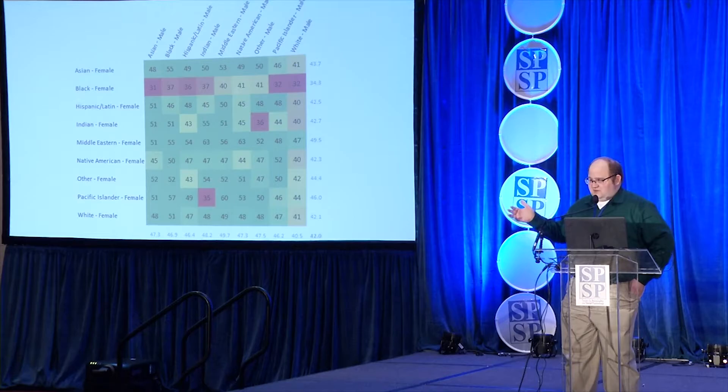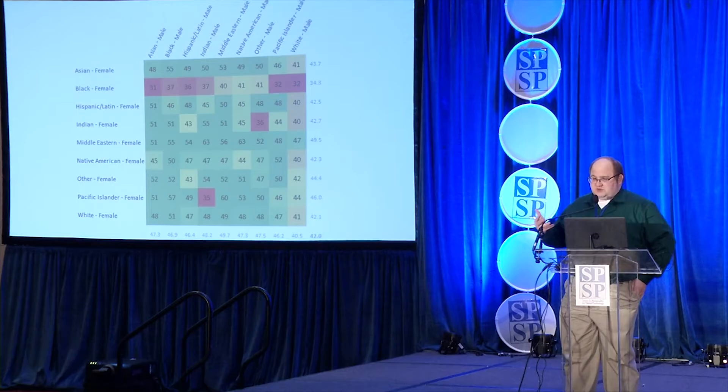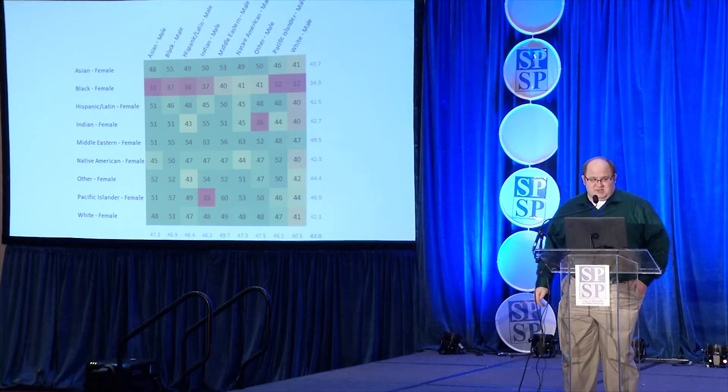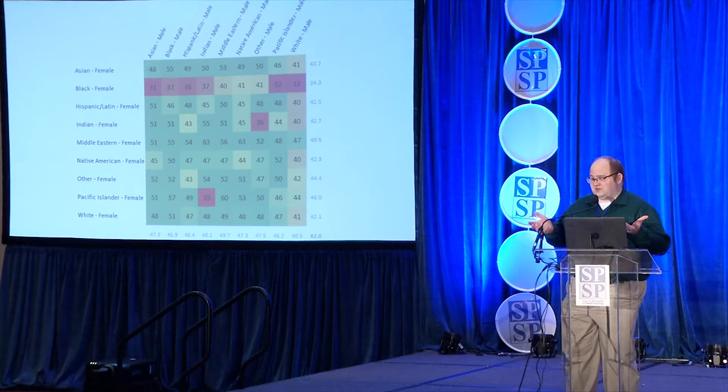The OkCupid data show a striking pattern—Black women are sending out the most messages to all sorts of racial and ethnic groups and not hearing back. Black women send out the most messages but get the least responses. Based on this OkCupid data, we hypothesized that if participants are encountering Black profiles on Tinder, they might be less likely to swipe right.